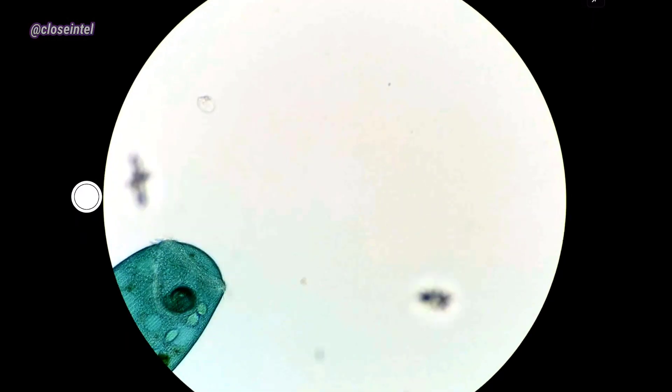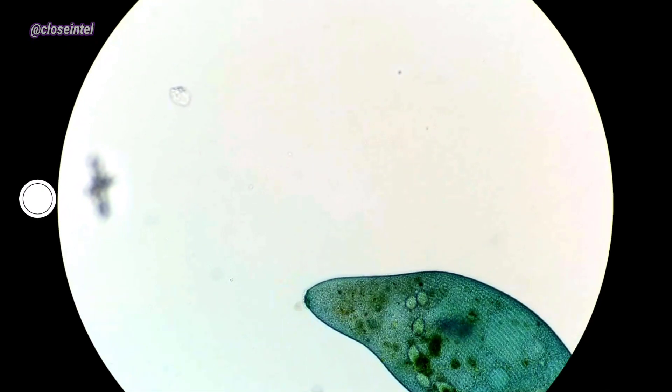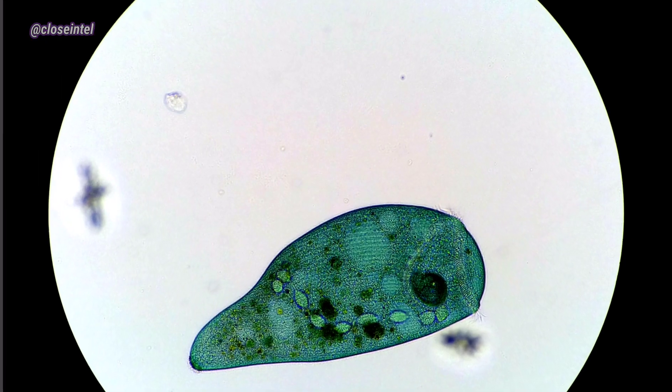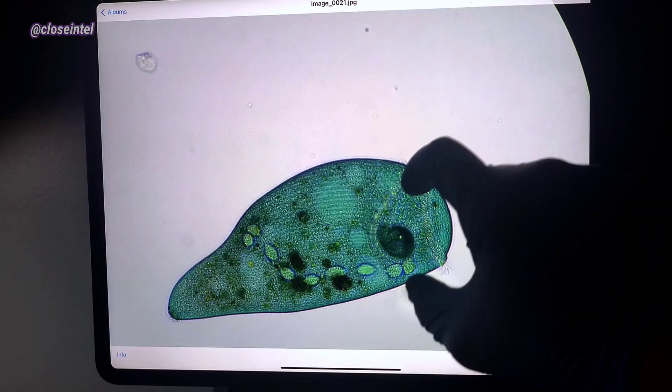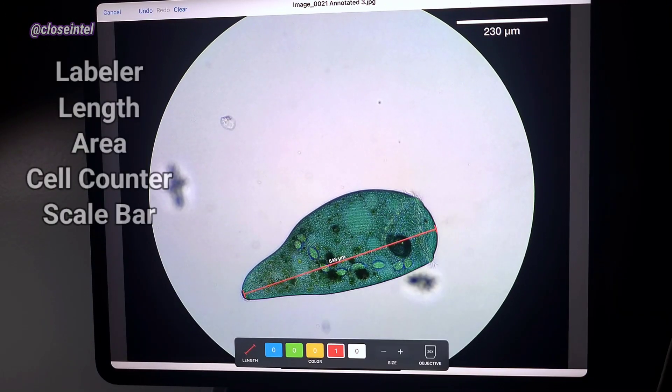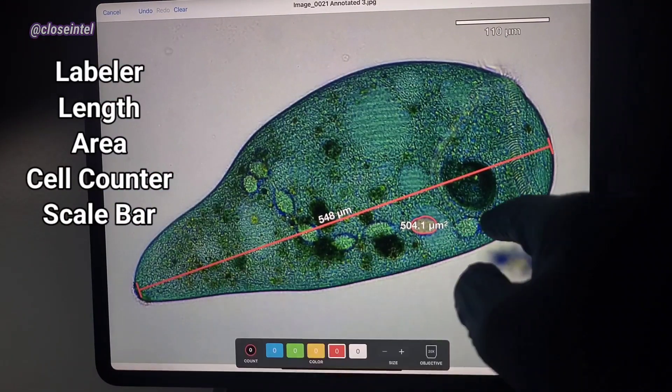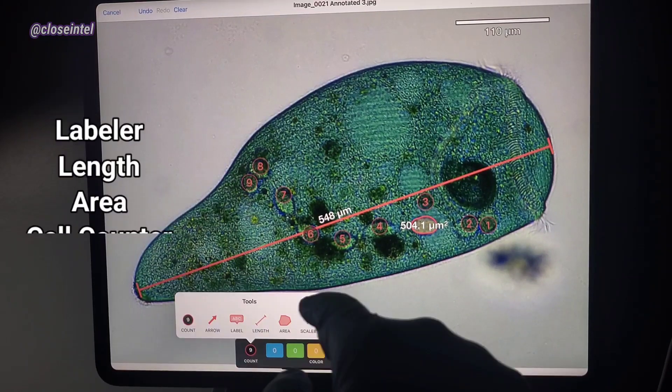Now I'm going to show you some of the software capabilities this microscope provides. I'll use some of these images of this stentor coeruleus to show off some of the software capabilities in the gallery. At the bottom left of the screen you can see that I can choose between length, area, cell count, and a scale bar. As you can see the length of the stentor is around 500 microns or 0.5 millimeters.